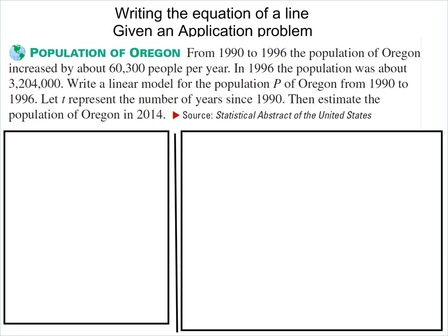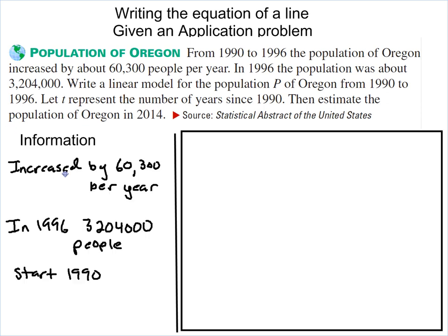Next I want to look at is an application problem. Application problems can come in a variety of formats, and it really just depends on the information that we get out of the problem. Whenever you're reading a word problem, the first thing you always want to do is actually to write down all the information they gave you. So in this case, they told me it increased by about 60,300 people per year, and then they said in 1996 the population was 3,204,000.